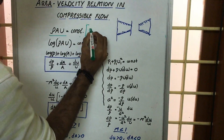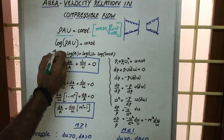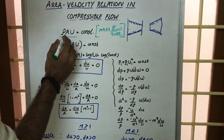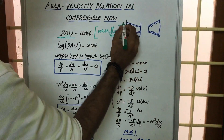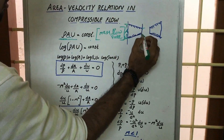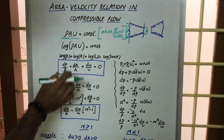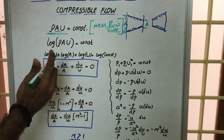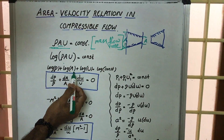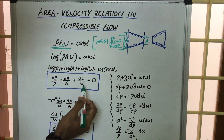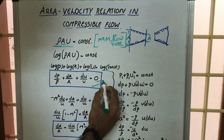The mass flow rate equation is ṁ = ρAu, where ρ is the density, A is the area, and u is the velocity. Taking the logarithm of ρAu equals a constant, and differentiating: dρ/ρ plus dA/A plus du/u equals zero, since the derivative of a constant is zero. This is the first equation we require.